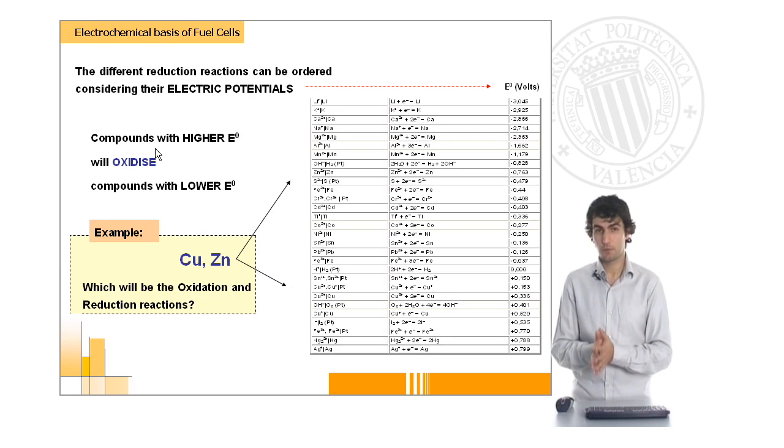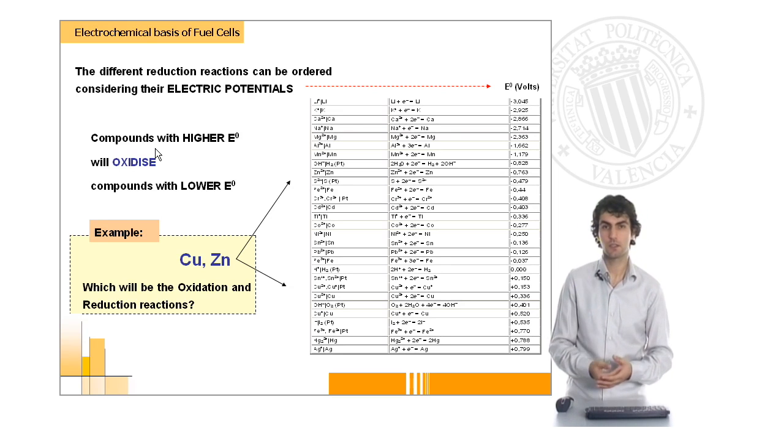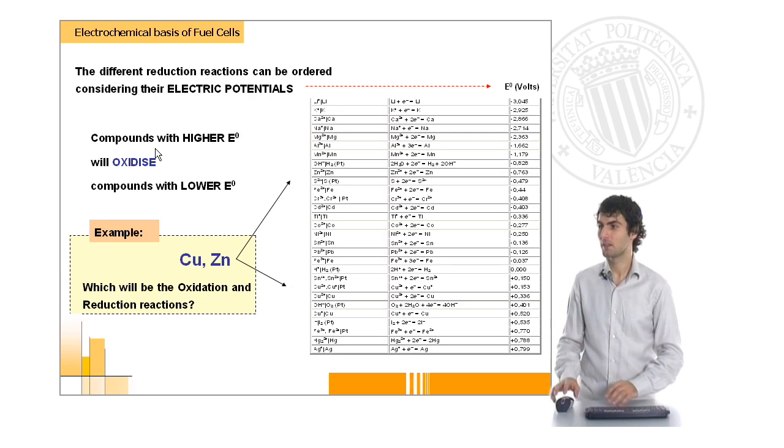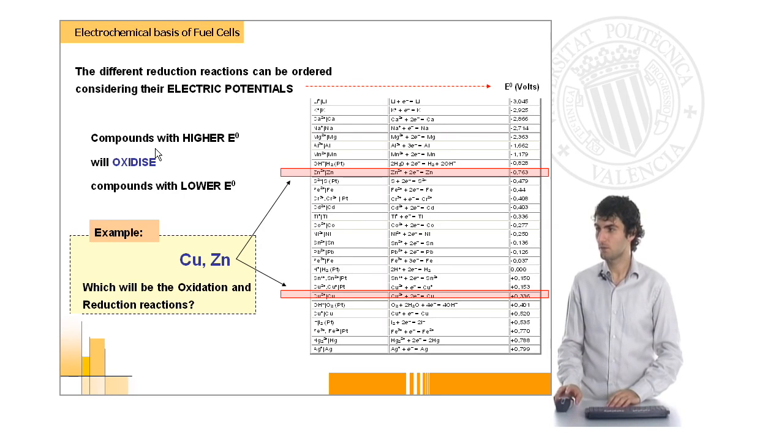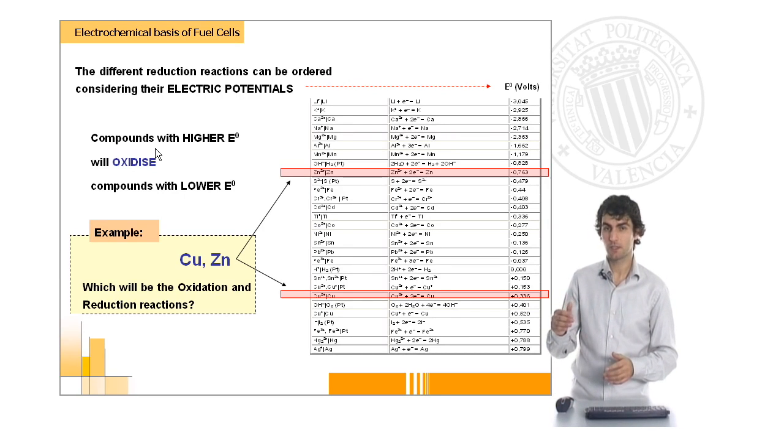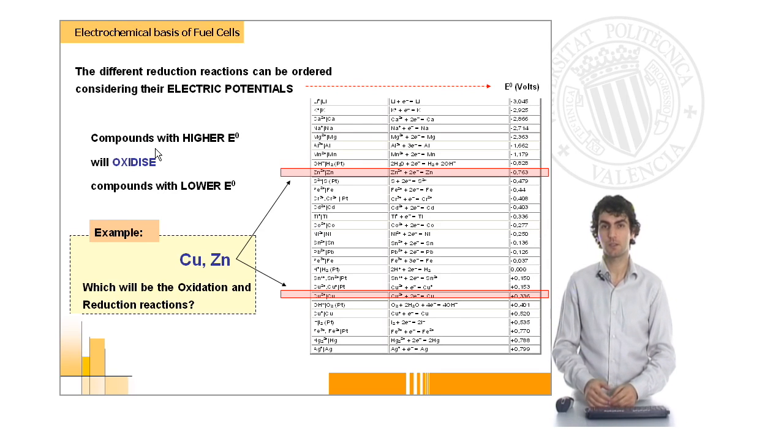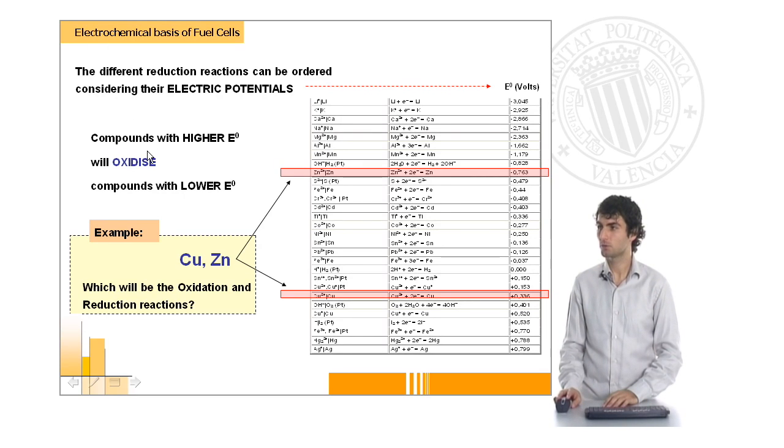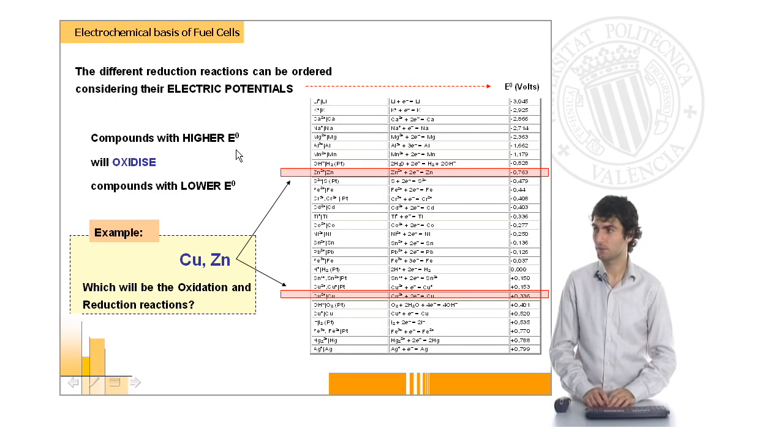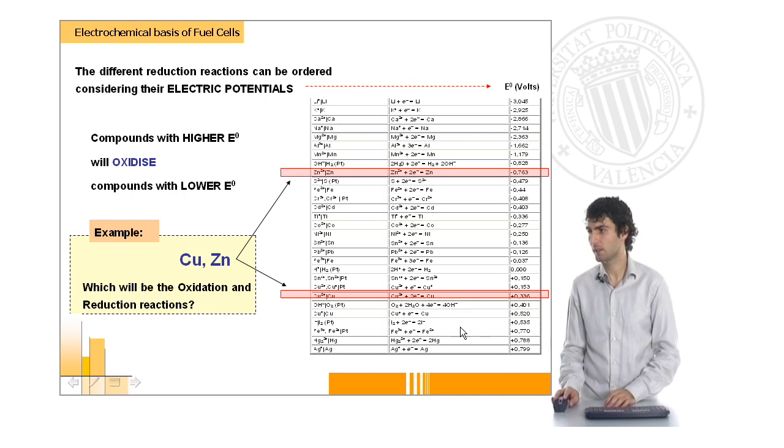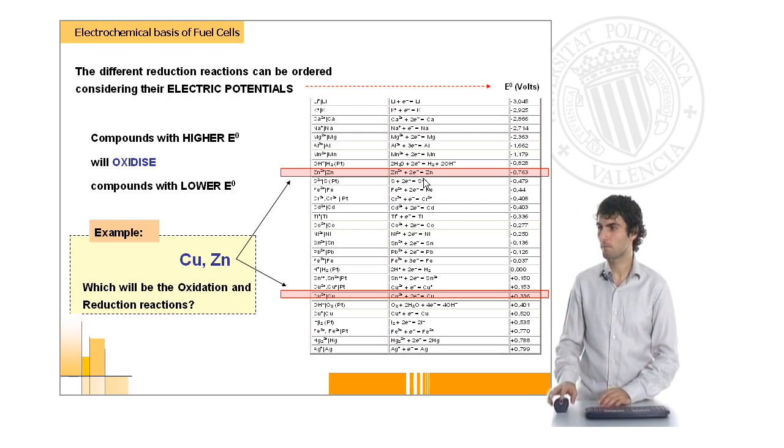It is also very important when we put two species together to know which is going to act as the oxidizer and which as the reducer. For this, we need to locate them in this table and see what their reduction potentials are. In general terms, compounds with higher reduction potentials, which in this table are placed on the bottom, will oxidize those which are placed higher on the table.